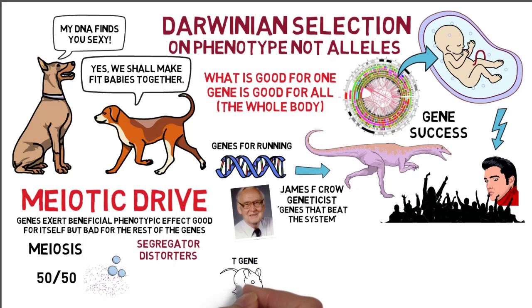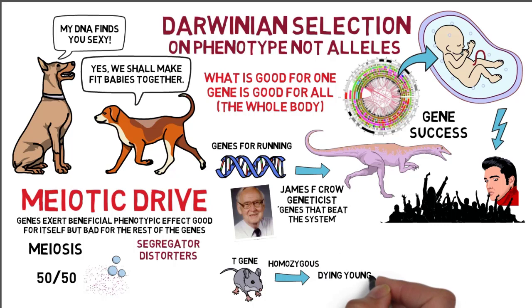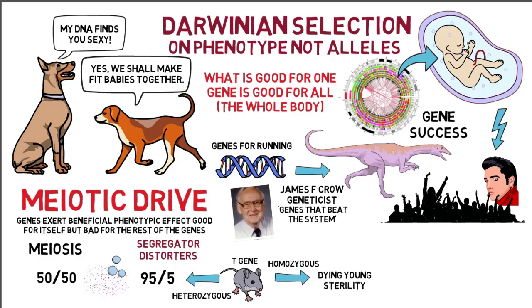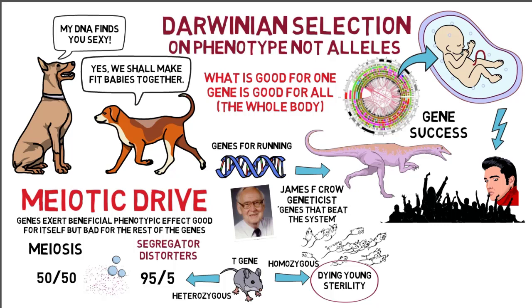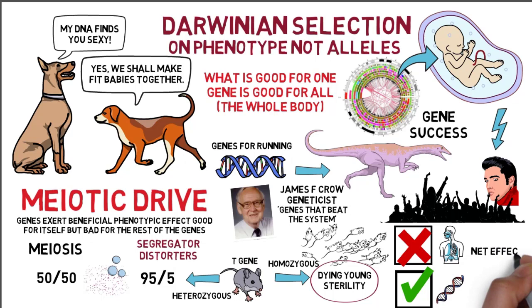One example is the T gene in mice, where inheriting two genes — the homozygous state — leads to dying young or sterility. A male mouse with only one T gene will be healthy, but 95% of the sperm will contain the T gene, leaving only 5% with the normal allele. Natural selection favors segregation disorders and the gene will spread quickly in the population. However, individuals will start inheriting two genes and this will lead to the extinction of the population. Although not all segregation disorders are so destructive, most have adverse consequences. The net effect of bad effects on the body and good effects on the gene is overall bad.